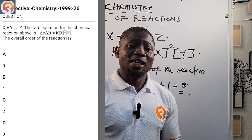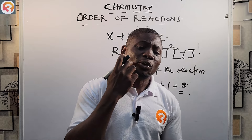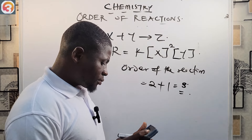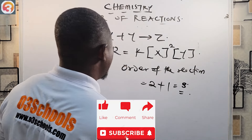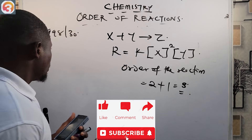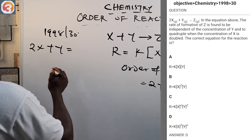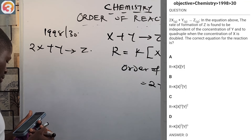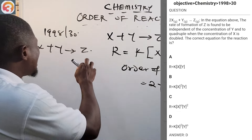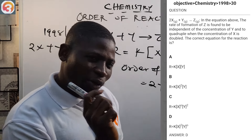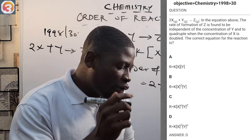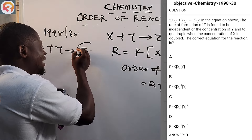It is very simple. The overall order is found by adding the powers: the power on [x] is 2, and the power on [y] is 1 (even though it is not written, it is 1). So the overall order is 2 + 1 = 3. The answer is option D. The app also provides an explanation of why that is the correct answer.